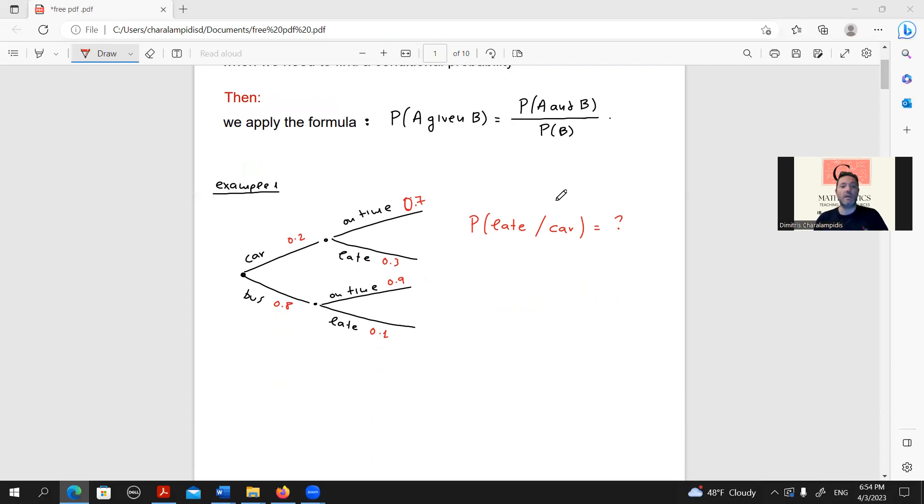Here you are given a tree diagram. It's, as always in this series of videos, the common example of selecting either the car or bus to go to school and then seeing whether I'm on time or late. And we have also the corresponding probabilities.